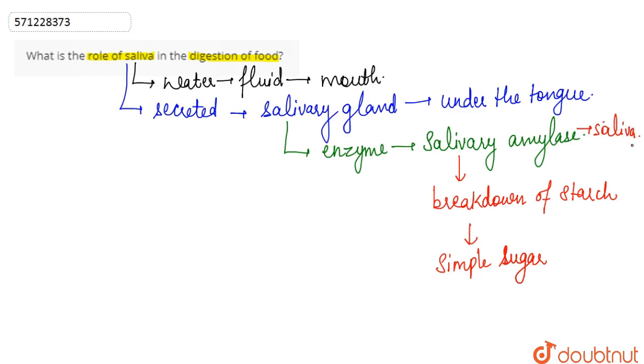This enzyme is present in the saliva and is mainly responsible for the breakdown of starch into simple sugar. So in simple words we can say that the digestion of the sugar, digestion of these complex sugars itself starts from the mouth.